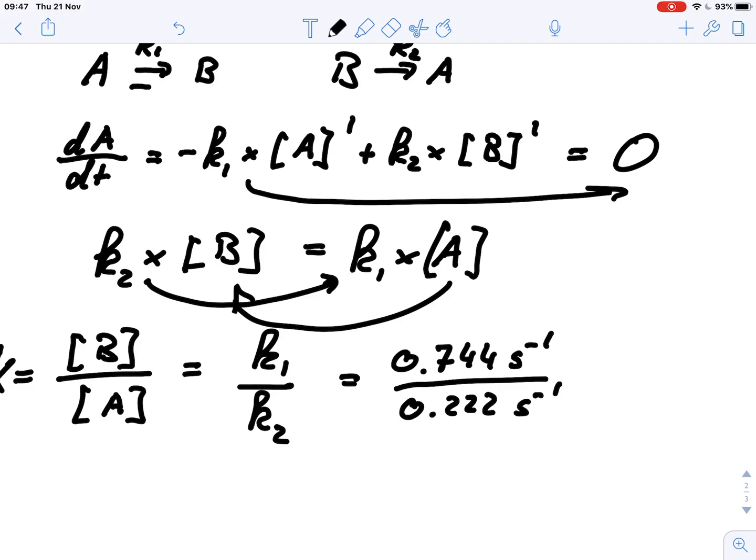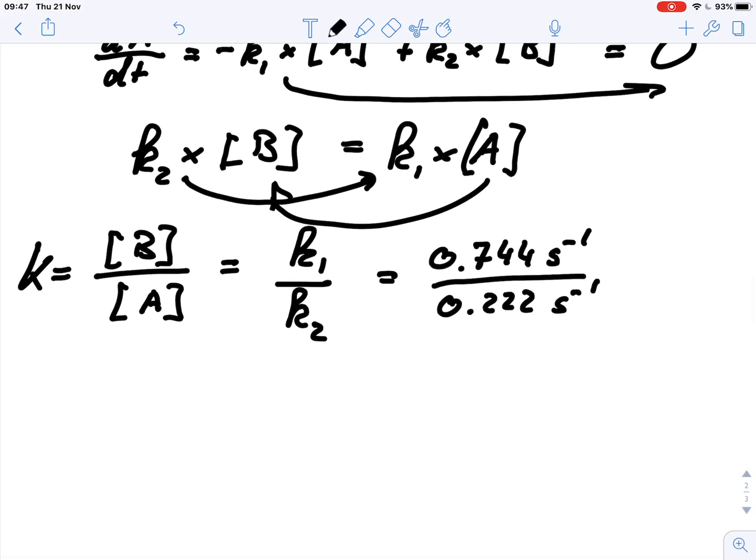And this would give us, we see that the units cancel out. So that's quite nice. And we get k equals roughly 3.35. So we get the concentration B over A equals 3.35.